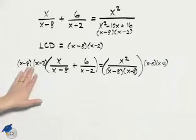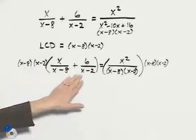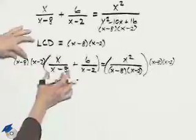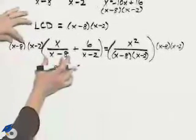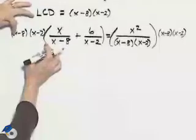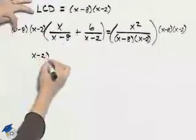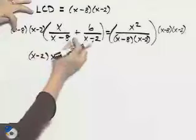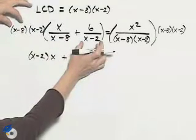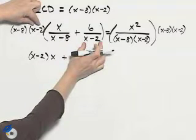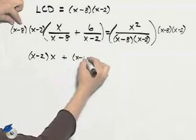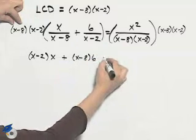Now, I can distribute this through. For the first piece, we notice that we have a common factor of x minus 8, so the x minus 8s will cancel when I multiply, so I'll end up with x minus 2 times x. Now, we'll multiply this times the second piece. We notice that we have a common factor of x minus 2, so we'll have x minus 8 times 6.